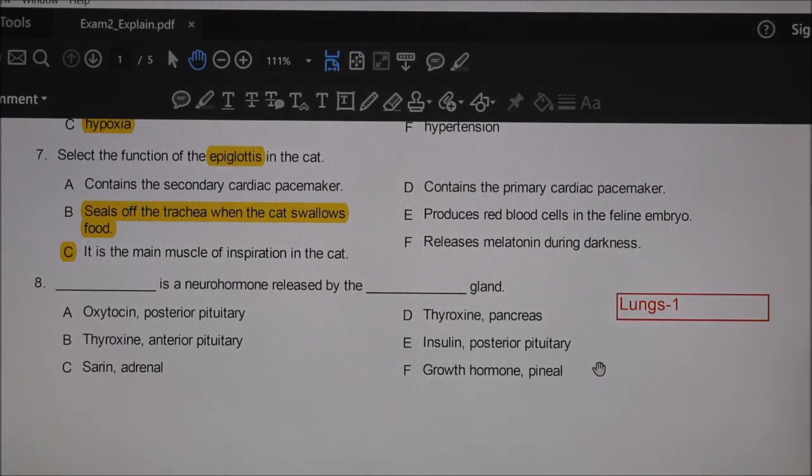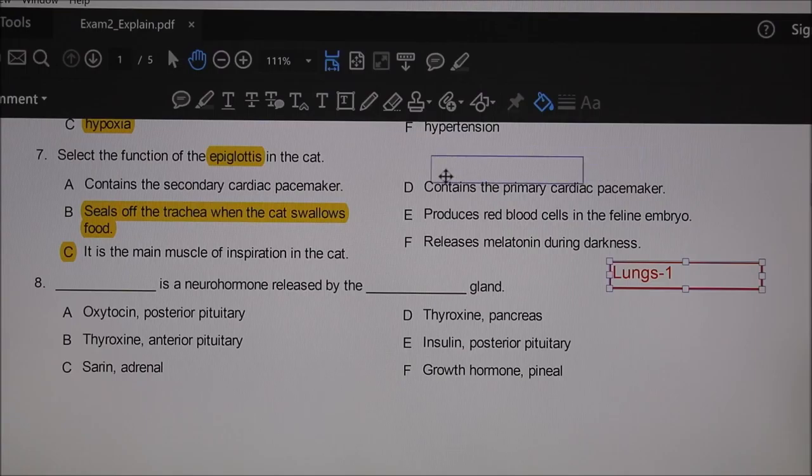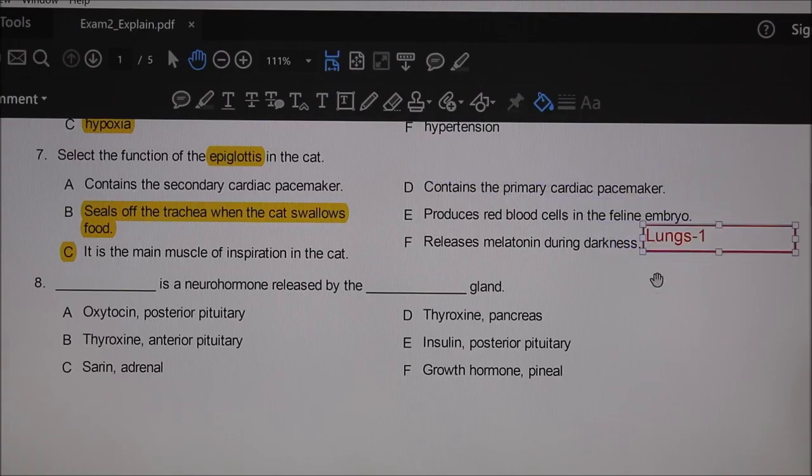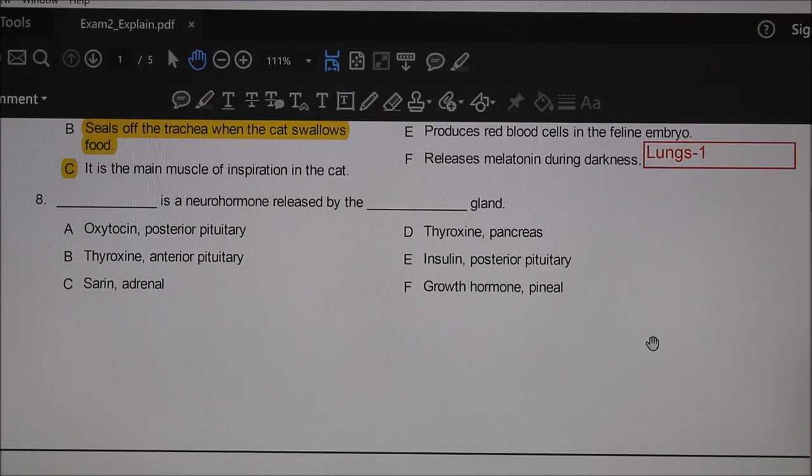Select the function of the epiglottis in the cat. It's this cartilaginous material structure at the back of the mouth, and it's B—it seals off the trachea when the cat swallows food.